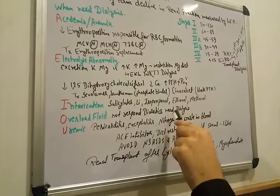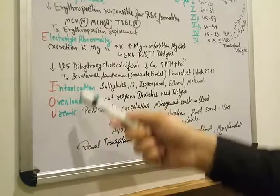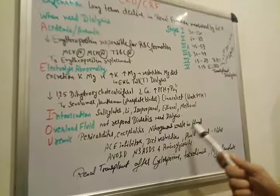And U, uremia. Uremia is pericarditis encephalitis, nitrogenous waste in the blood. It causes pericarditis encephalitis.